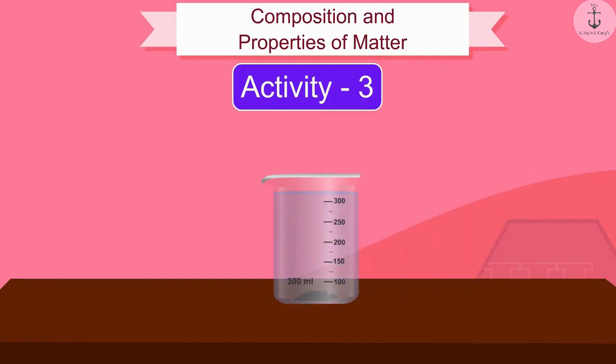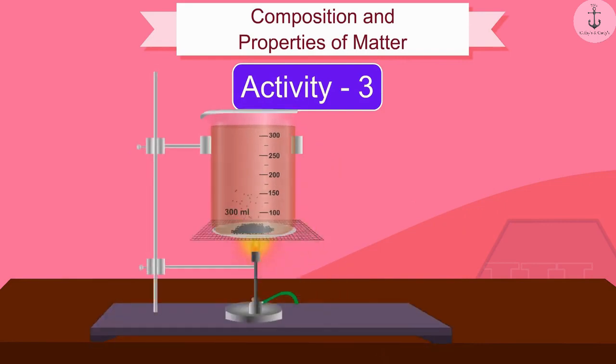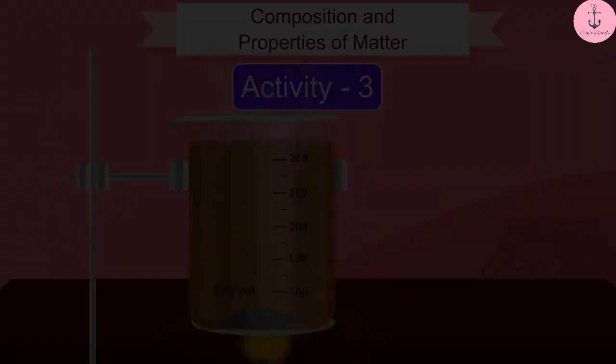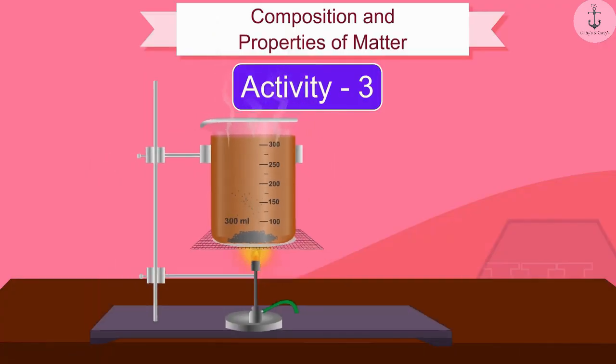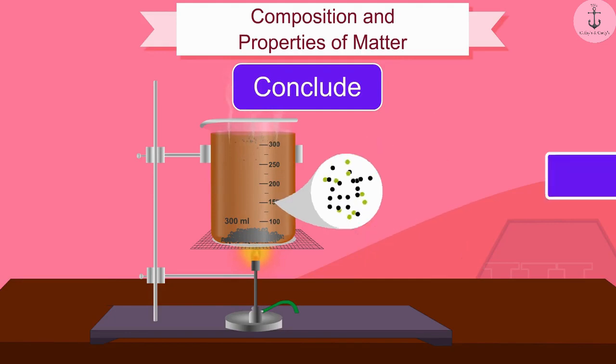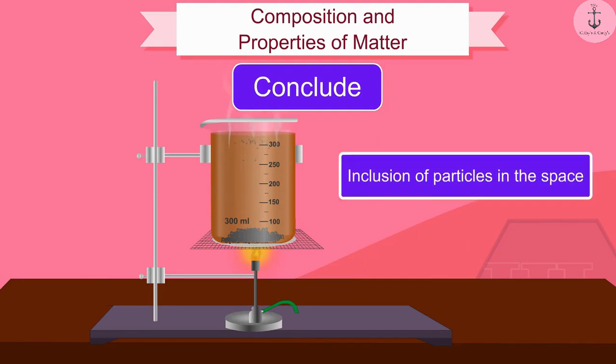We can see that the color of water is changing after some time. Now, if you heat this beaker, what do you see? You can see that on heating the beaker, the color of the tea dissolves more rapidly in water. From this activity, we can conclude that the particles of matter get intermixed with each other on their own. This is due to the inclusion of particles in the space.